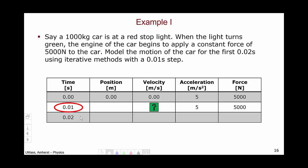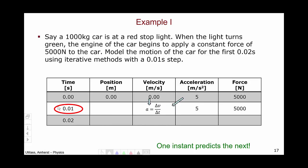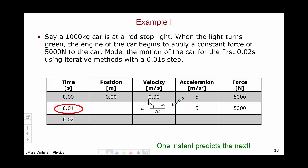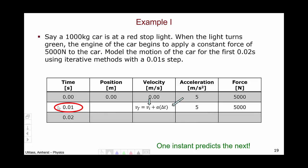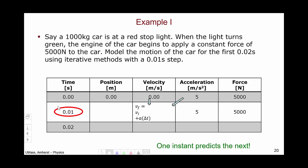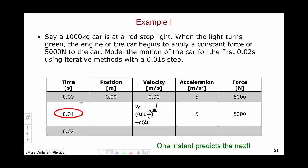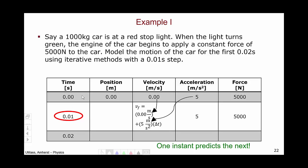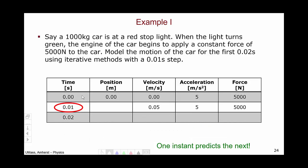The next thing we might be interested in is the velocity of the car. A key principle is that one instant predicts the next, so we're going to use t equals 0 to predict t equals 0.01. Using the fundamental definition of acceleration as delta v over delta t, we expand the delta into v-final minus v-initial and rearrange. The initial velocity is 0 meters per second, the acceleration is 5 meters per second squared, and delta t is 0.01 seconds, giving us a velocity at t equals 0.01 of 0.05 meters per second.